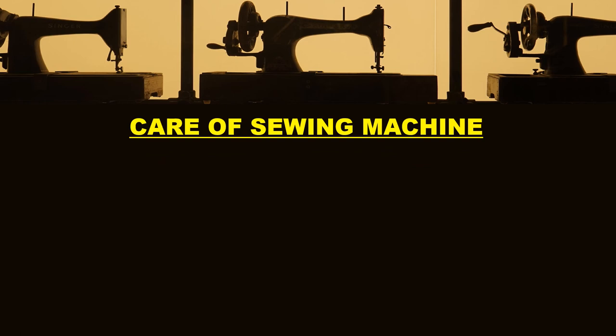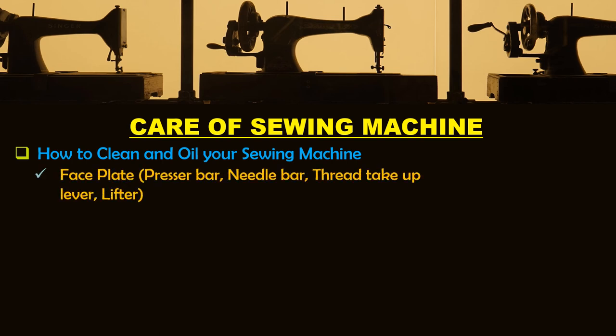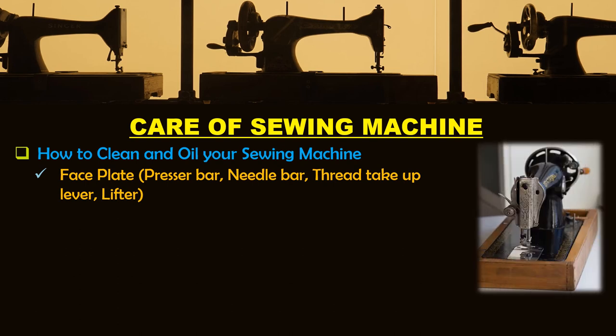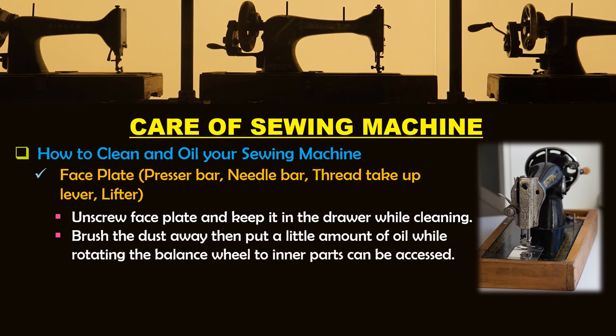How to clean and oil your sewing machine. Locate the face plate, presser bar, needle bar, thread take-up lever, and lifter. First, unscrew the face plate and keep it in the drawer while cleaning. Next, brush the dust away, then put a little amount of oil while rotating the balance wheel so any parts that can be accessed are lubricated. Then put back the face plate in place.